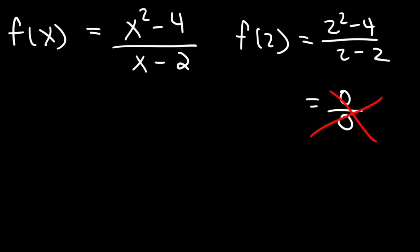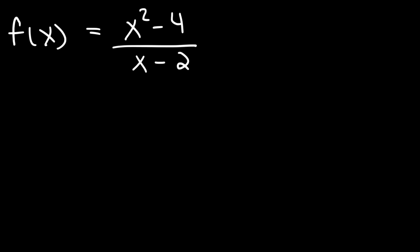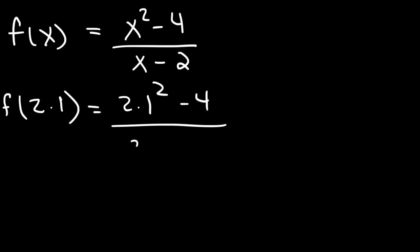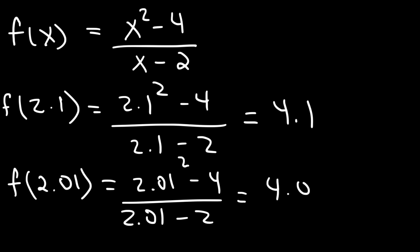Since we can't find the value of the function when x is 2, can we find out what the function will do as x approaches 2? What happens when x is 2.1? If we plug in 2.1, we get 4.1. What if we plug in a number even closer to 2, like 2.01? That gives us 4.01. So notice that as x gets closer and closer to 2, the value of the function gets closer and closer to 4.